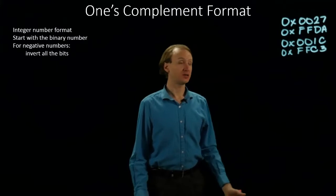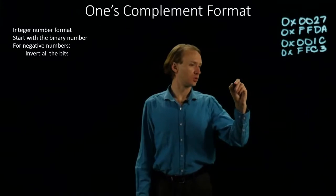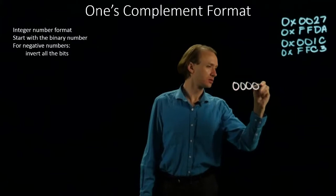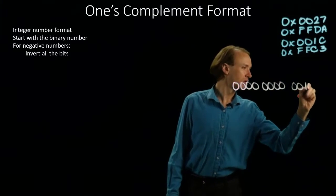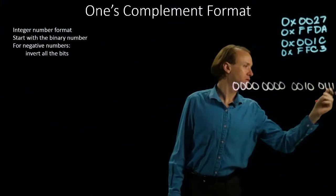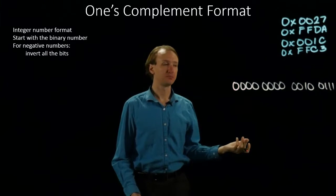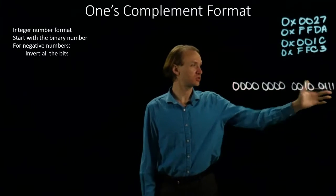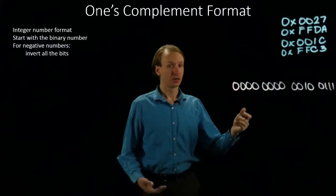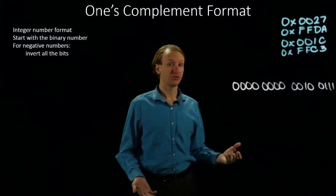My first number is 27 in hexadecimal, which looks like that in binary. The leading bit is a zero, so this is a positive number. That means I can just read off the bits as is, and that will be the magnitude of my number.